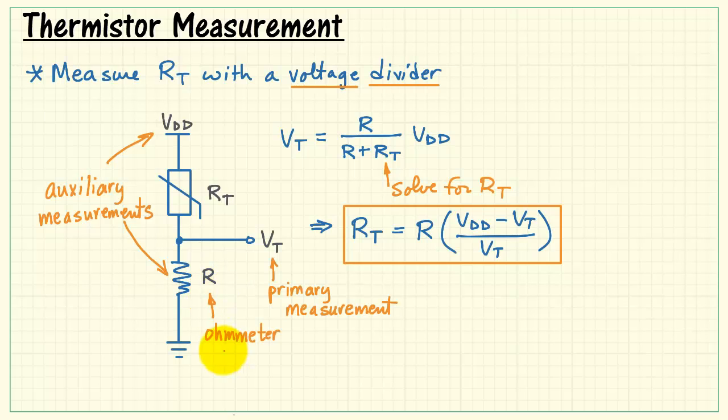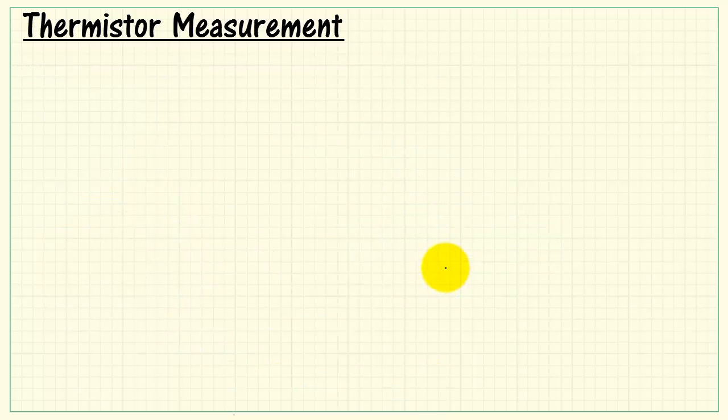The resistance R can be measured with an ohmmeter, but make sure you do that before connecting the resistor into the voltage divider. You cannot use the ohmmeter once the resistor is in place.